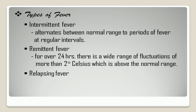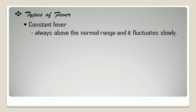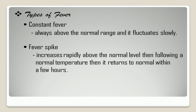Relapsing Fever — short febrile episodes for a few days combined with a normal temperature for 1 to 2 days. Constant Fever — body temperature that is always above the normal range and fluctuates slowly. Lastly, Fever Spike — a body temperature that increases rapidly above the normal level, then returns to normal within a few hours.